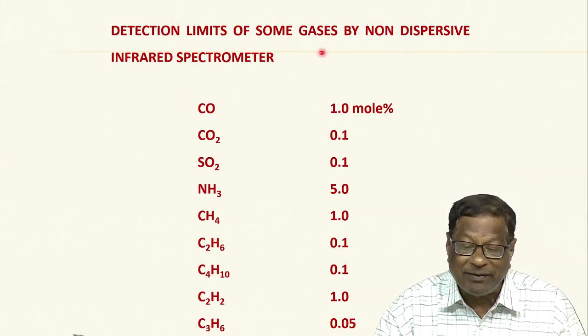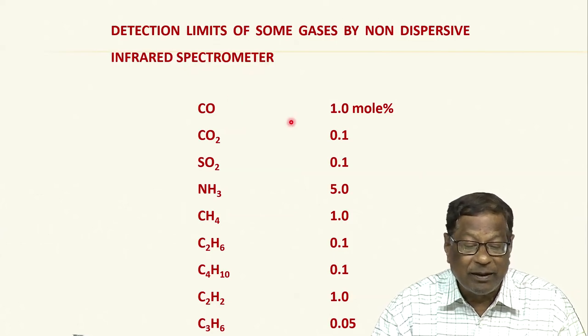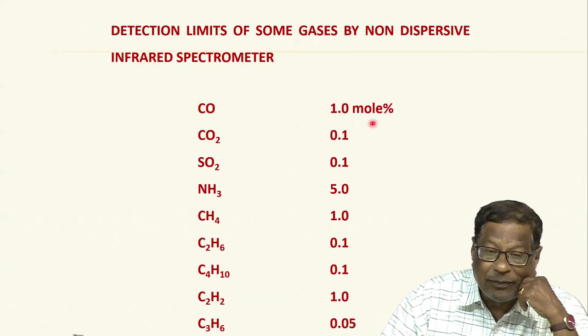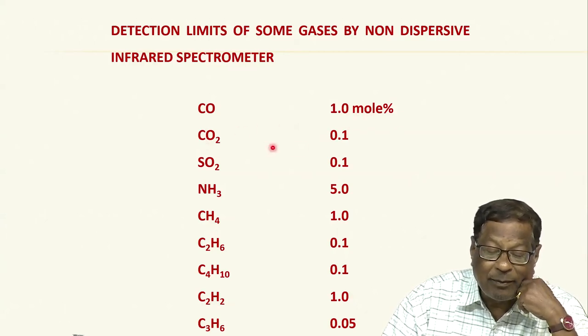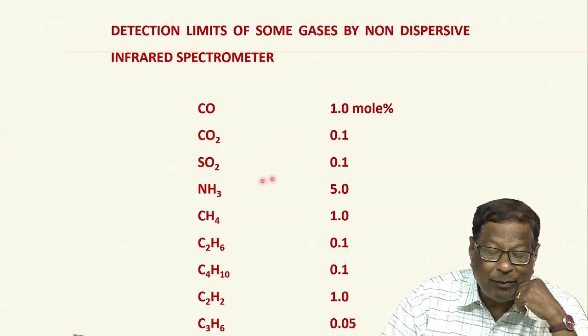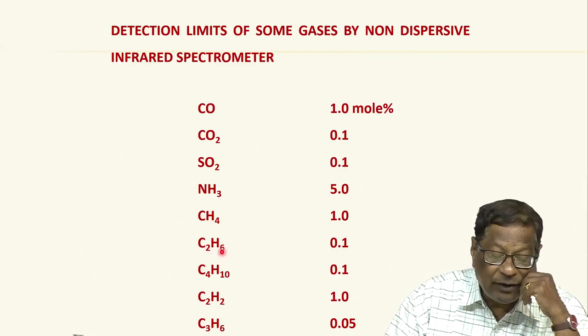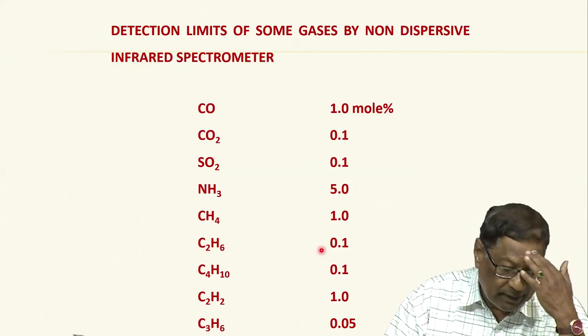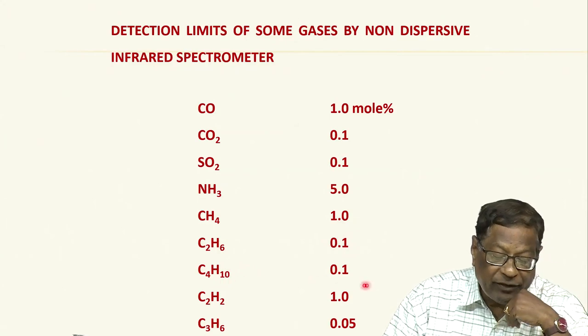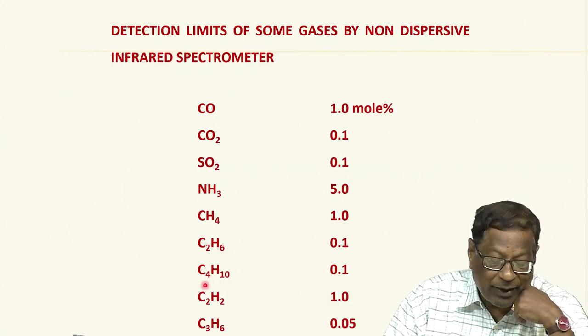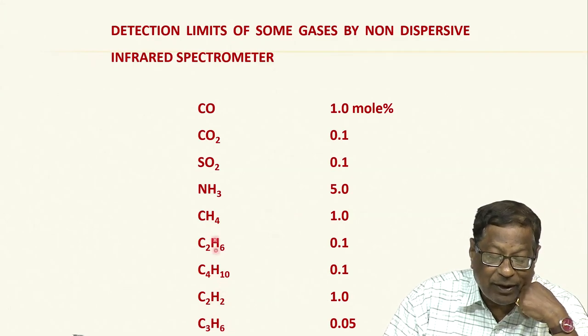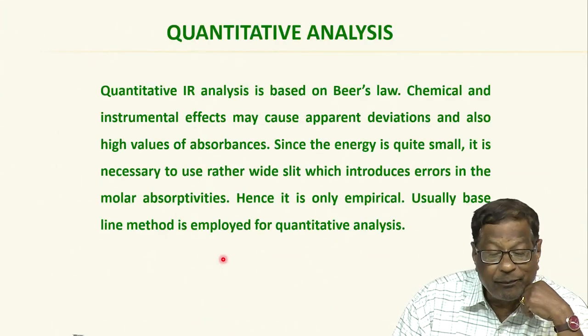Detection limits of some gases of non-dispersive infrared spectrometer: CO can be determined at 1 mole percent, CO2 at 0.1 mole percent, SO2 at 0.1 mole, ammonia at 5 mole percent, CH4 at 1 mole percent, C2H4 ethylene at 0.1 mole, C2H6 ethane at 0.1 mole, C4H10 at 0.1 mole, and C3H6 at 1 mole percent. These are methane, ethane, butane.